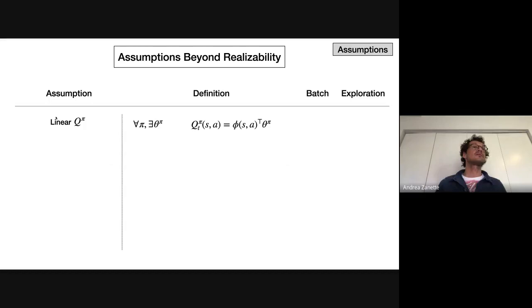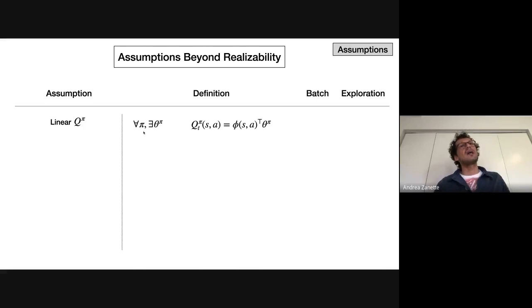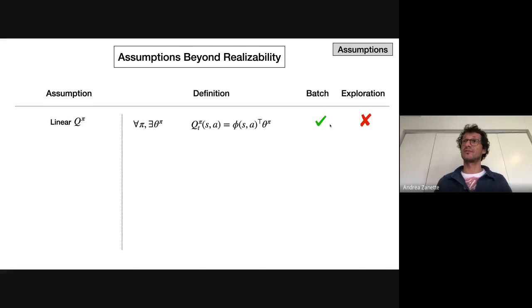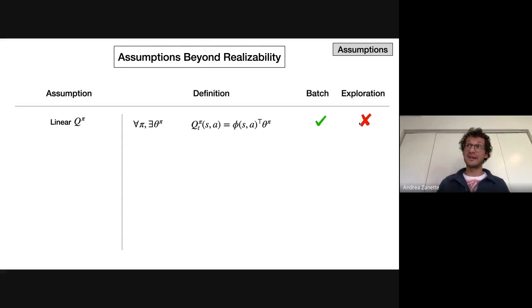A typical assumption is linearity of the Q-function, normally used in least-square policy improvement. This is often what people think about when they say linear Q-function. The assumption is that for every policy, you can find a parameter that represents the Q-value as an inner product. So not only the optimal policy, but any policy can be represented linearly. In terms of sample-efficient algorithms, we have results for batch RL and we know how to solve this setting with a generative model, but for general online exploration, we still don't know how to use this assumption alone.